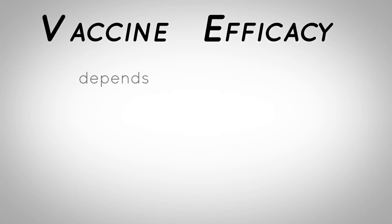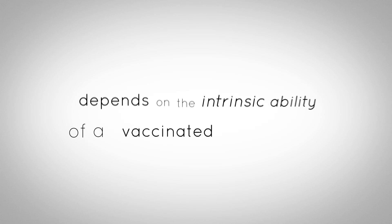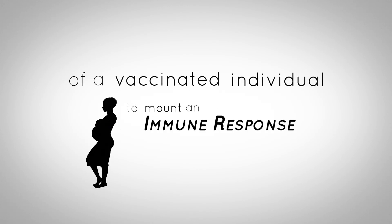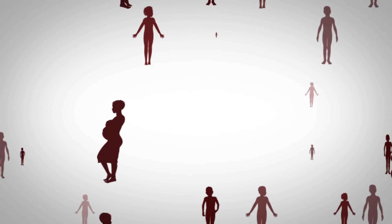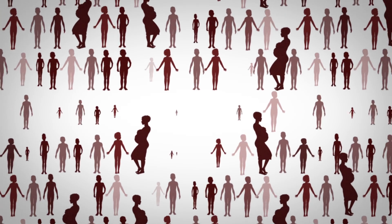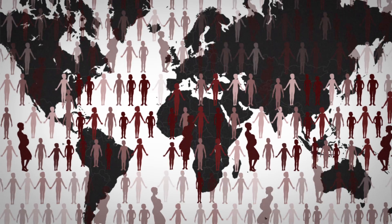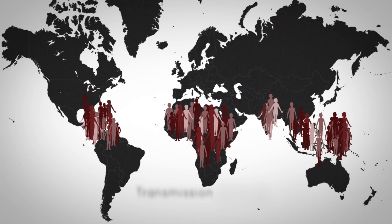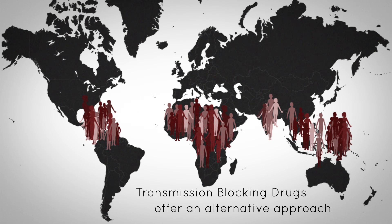Vaccine efficacy depends on the intrinsic ability of a vaccinated individual to mount an immune response, and this is negatively impacted by the poor health and nutrition status of vaccinees in malaria-endemic countries. Therefore, transmission blocking drugs offer an alternative approach that can circumvent this hurdle.